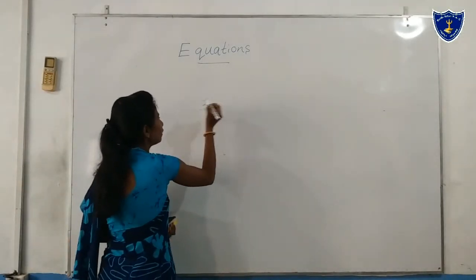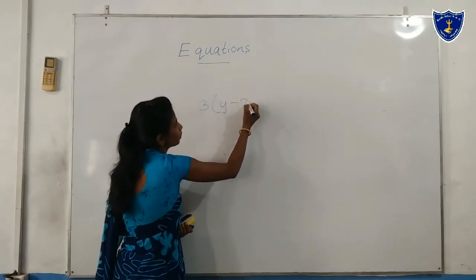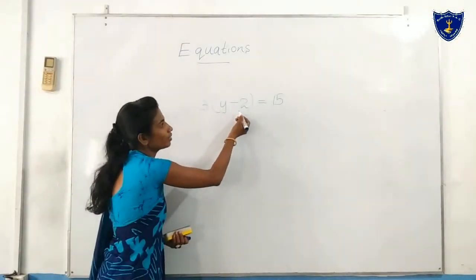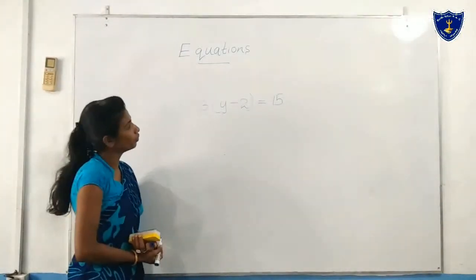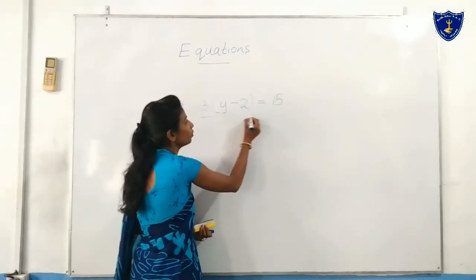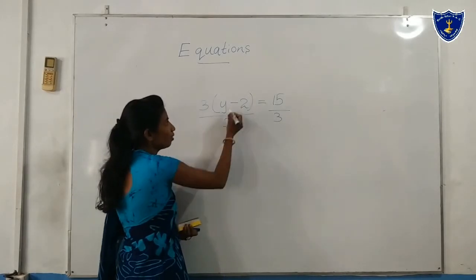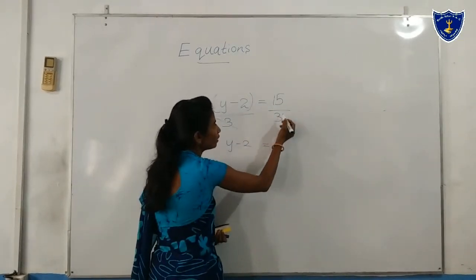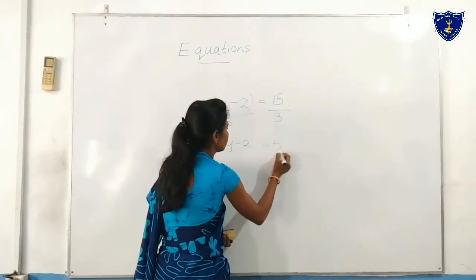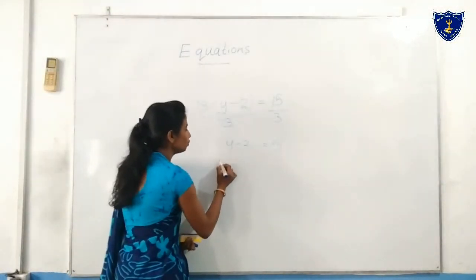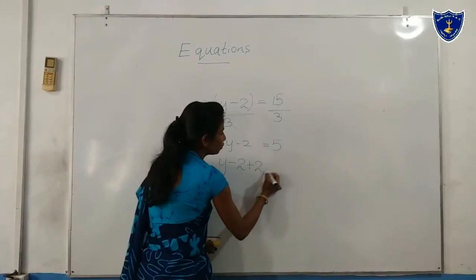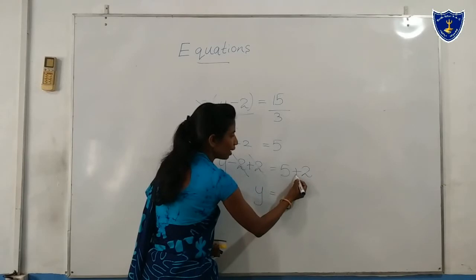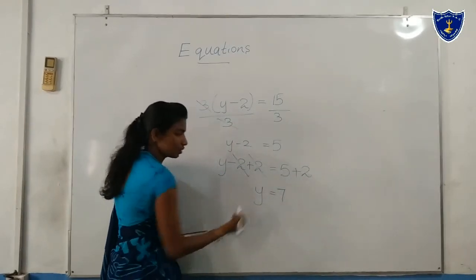Shall we take another example? Look at here: 3 times (y minus 2) equals 15. We want to take division — divide both sides by 3. The 3 cancels out, leaving y minus 2 equals 5. Next, we add 2 to both sides: the 2 cancels out, y remains, and the answer is 7. y equals 7 — that is the solution.